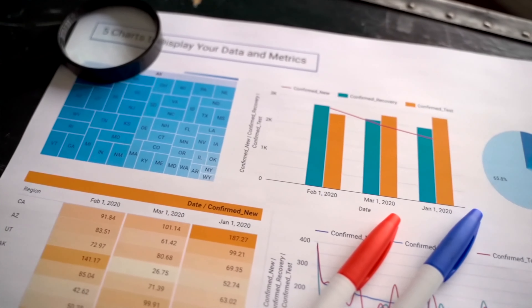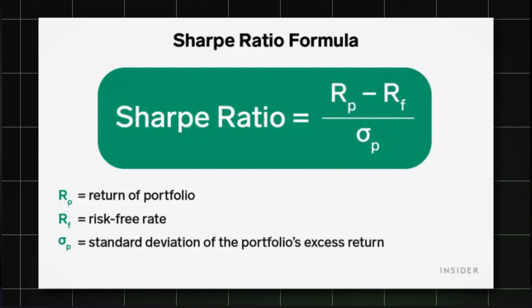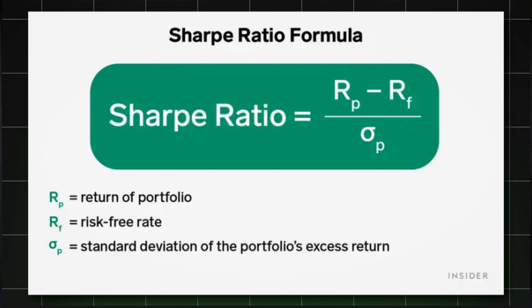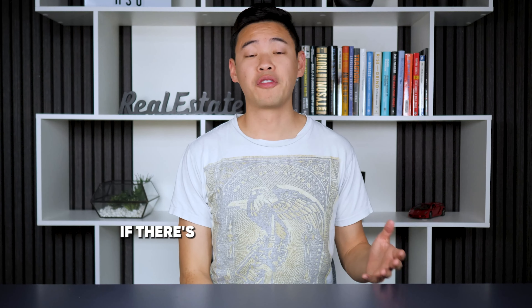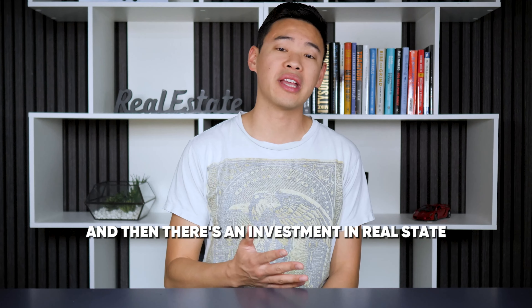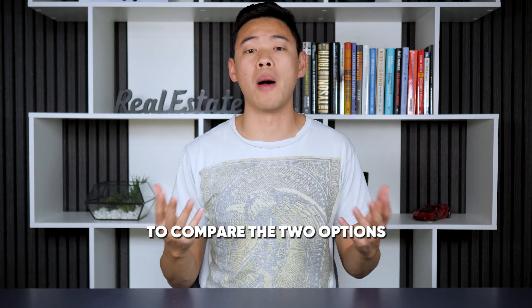However, not every investment is the same. Each investment has a different level of risk. The mistake many people make is they just compare the returns of different investments without calculating the risk of each investment. For example, people might see that Dogecoin made a thousand percent returns, while real estate only made 30 to 40 percent returns during the boom of 2021. However, in order to compare investments equally, you need to adjust each investment to the same risk basis. Risk-adjusted returns is a way to measure and compare returns on the same playing field by adjusting for risk — in the credit, the market, the operations, etc.